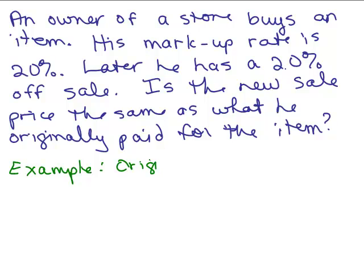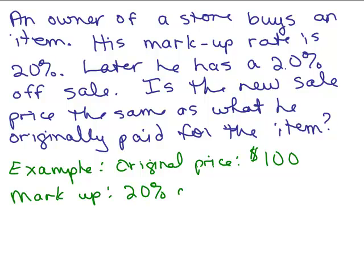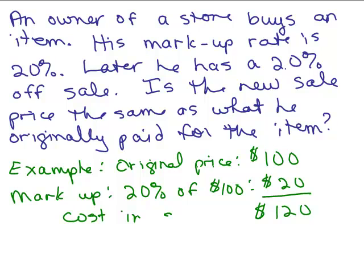So let's just do an example to see what goes on. Let's say the original price was $100. And then he marks it up. So he's going to mark it up. It's going to be 20% of $100. So that will be $20. Hopefully everybody is okay with that because this will be 0.2 times 100. So the new price is now $120. So this is going to be the cost in the store. That's what he's going to sell it for, the selling price.